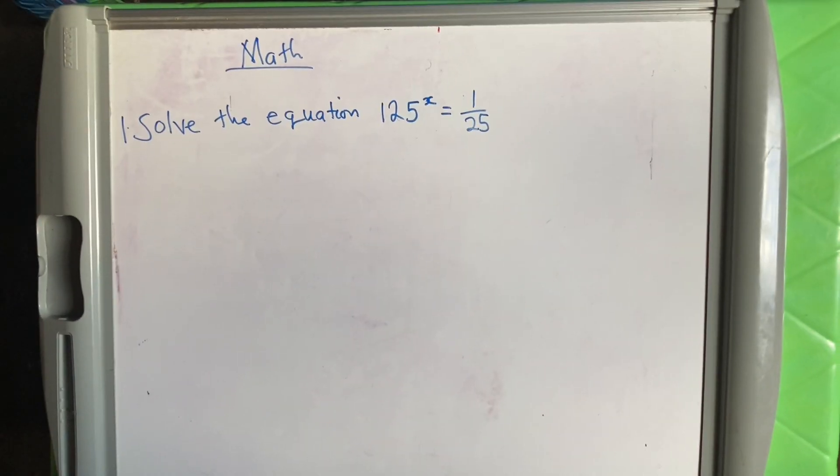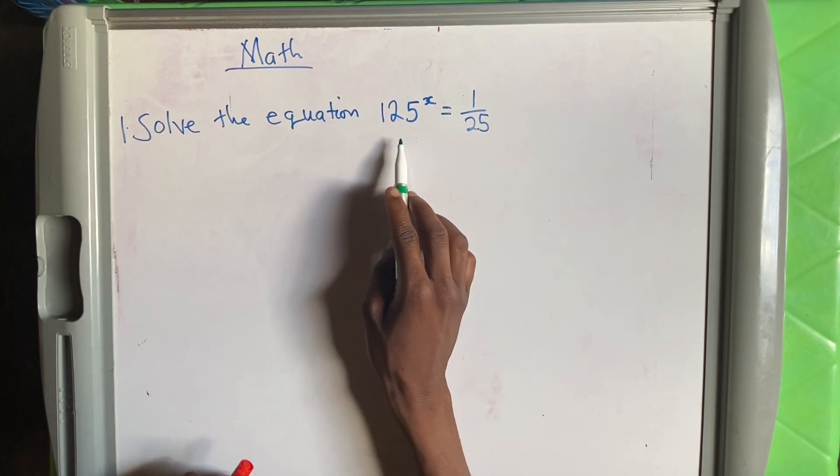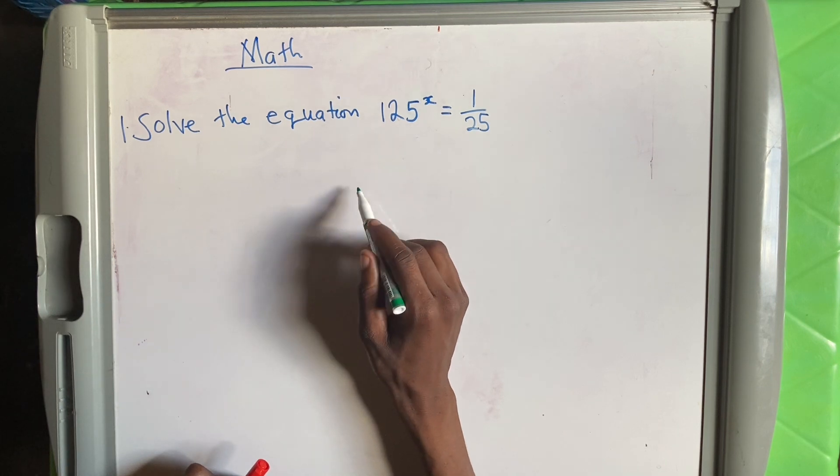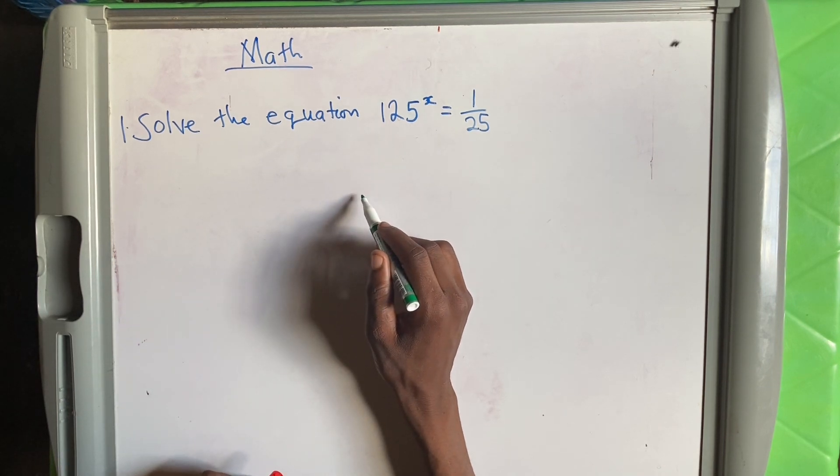Welcome back to my YouTube channel. Let us solve this question together as fast as possible from indices. Solve the equation 125 to the power x is equal to 1 over 25.